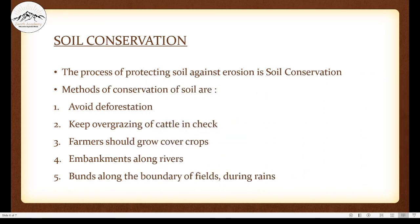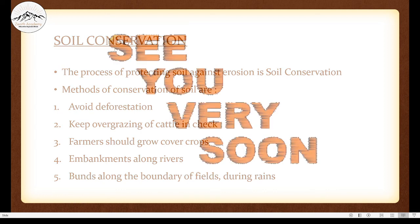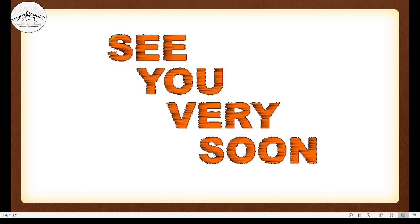I hope you all understood. Let's recap the methods of soil conservation: avoid deforestation; keep overgrazing of cattle in check; farmers should grow cover crops; embankments along rivers; and bunds along the boundary of fields during rains. I hope this chapter is clear to you. If you have any doubts or questions, please put them in the comment section below. Please like, share, and subscribe. Bye-bye, see you soon!